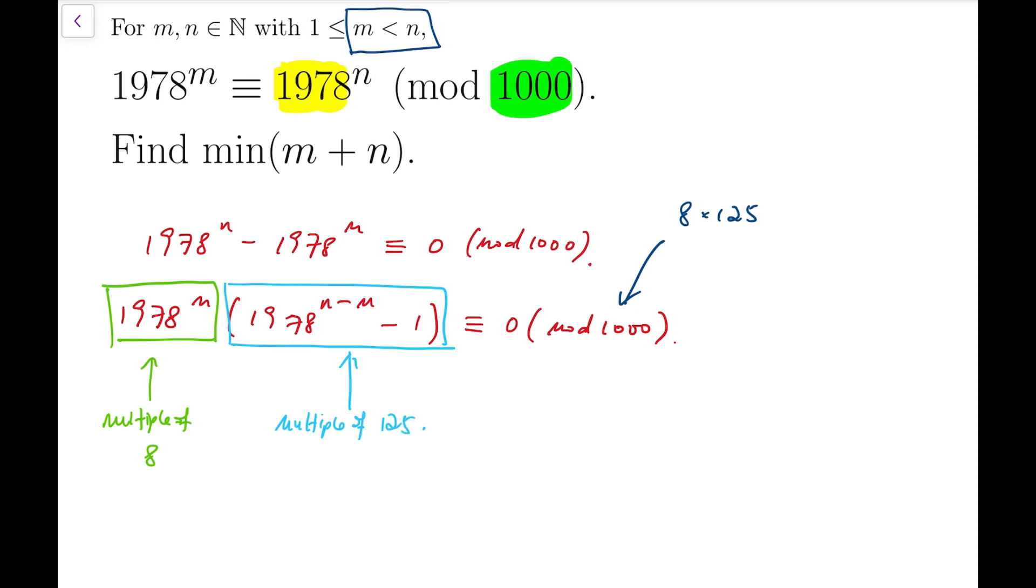Now from this property, we know that for the even part, because 1978 equals 2 times 989. So each, whenever we multiply this number once, we only add an extra factor of 2 by 1. So if we want this power to be multiple of 8, we must have m to be at least 3, so that we can have 3 twos multiplied together.